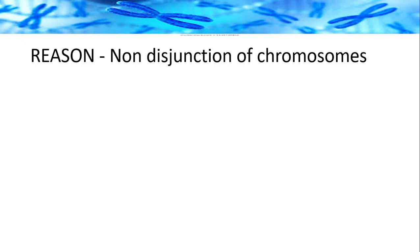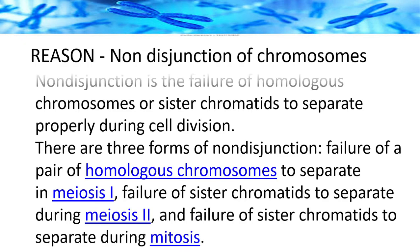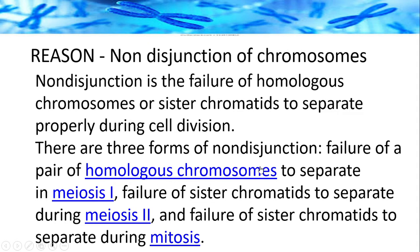Non-disjunction is the failure of homologous chromosomes or sister chromatids to separate properly during cell division. There are three forms: failure of a pair of homologous chromosomes to separate in meiosis I. Recall from class 11 that homologous chromosomes pair during zygotene, crossing over happens during pachytene, and then at anaphase I they try to separate — if this separation does not happen properly, both chromosomes will go to one daughter cell.